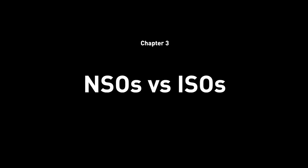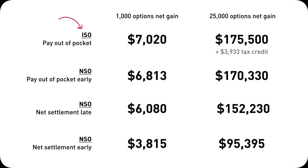Now you've seen the math breakdown for NSOs and ISOs. Do you have a clear idea which one is the winner? Maybe some side-by-side comparison can provide further insight. Let's go to chapter 3: NSOs versus ISOs. What are their differences? Is there a clear winner? Looking at this table, ISO is objectively more superior because you can make more money and get tax benefits. Even the best way to exercise NSO can only come second, and it's a few thousand dollars short. The less optimal ways to exercise NSOs yield even lower profit compared to ISO.